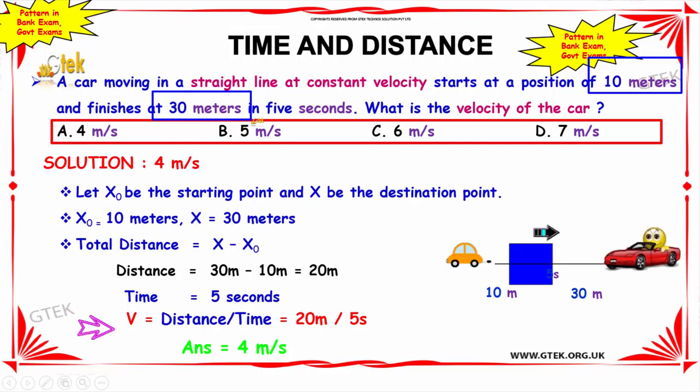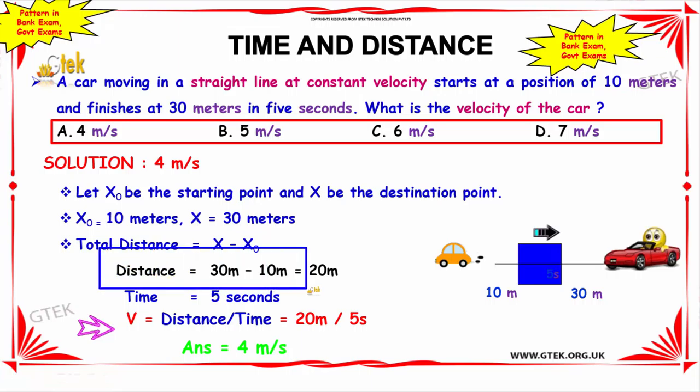So the total distance is equal to x minus x0. So substituting the value of x and x0 in this equation, we get the distance is equal to 30 meter minus 10 meters, which is equal to 20 meters. So the total distance is 20 meters. And time is given as 5 seconds.